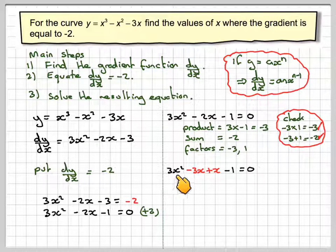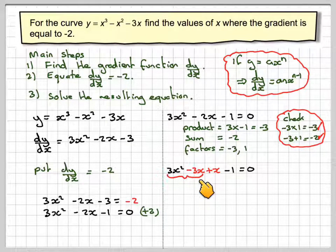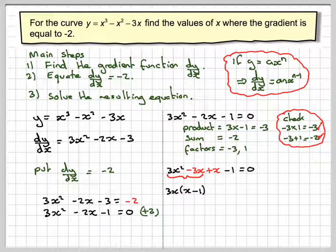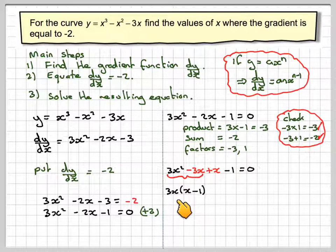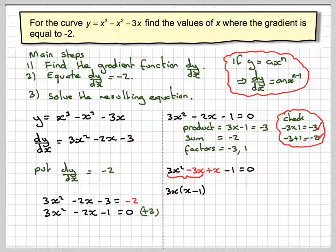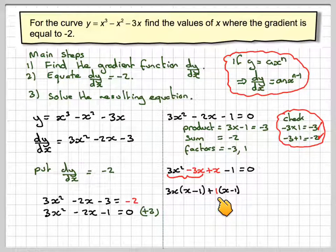And then we factorise by grouping. So we group that and that together. And we take out a common factor here. The highest common factor is 3x, and we're left with x minus 1. Here there is no common factor, but we have to put the plus sign and the bracket, x minus 1, and it might be a good idea to enter the 1.